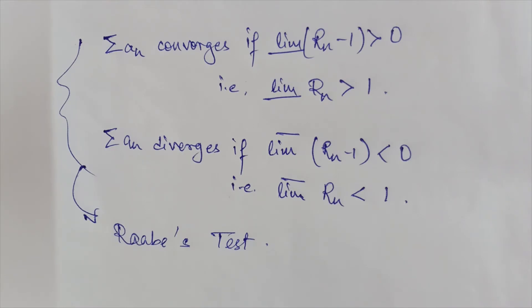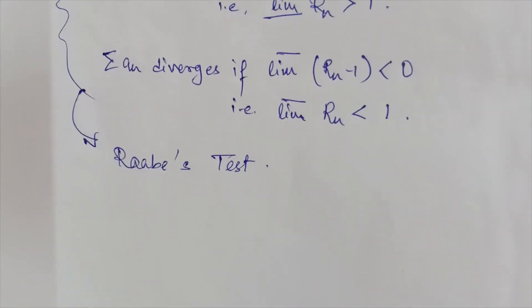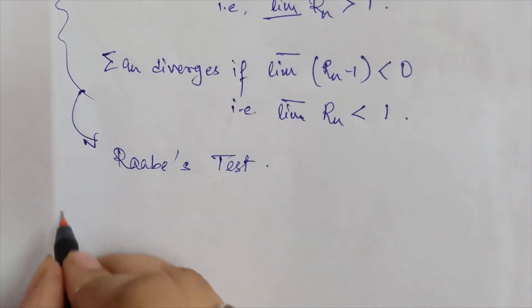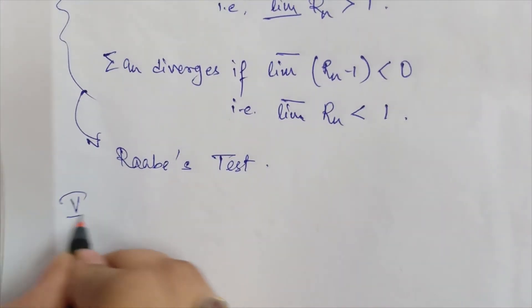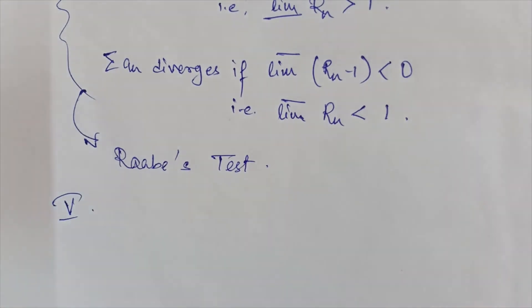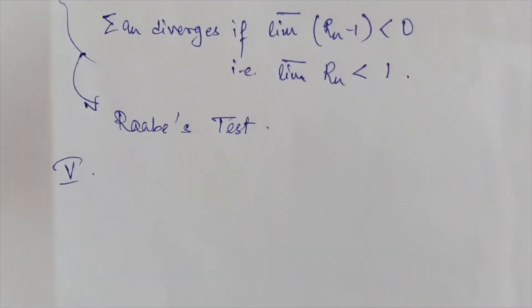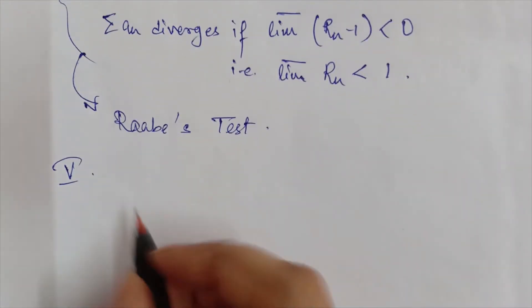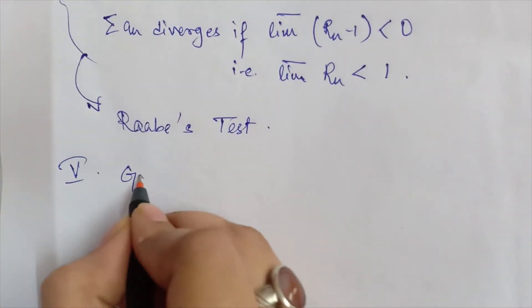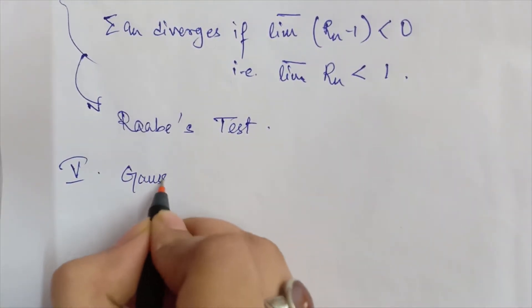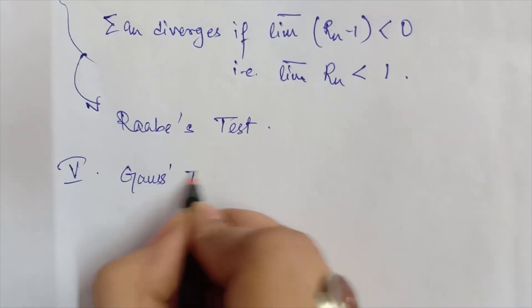In a similar way, using Kummer's test we can also prove another test called Gauss's test, which gives the results of D'Alembert's ratio test and Raabe's test in a more compact form. So from here we come to the fifth test, which is Gauss's test.